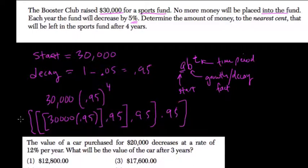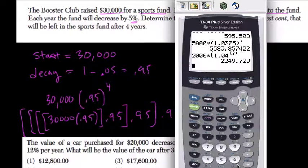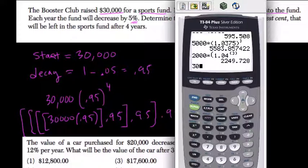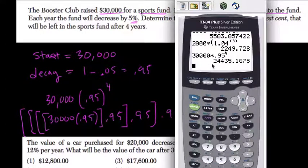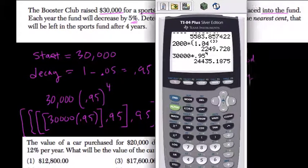So every time you have 95% of what you had before. So that would be annoying to do, so we can do this pretty quickly by doing 30,000 times 0.95 to the fourth power. So after four years, we'll have 24,435.